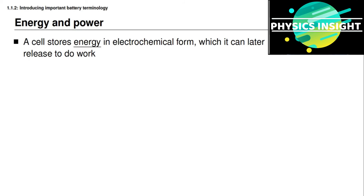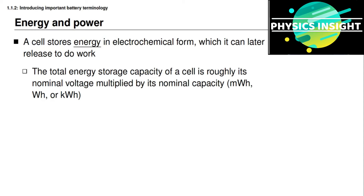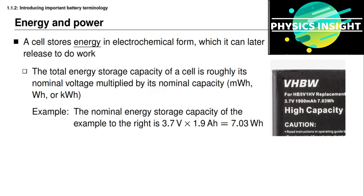We use battery cells because they store energy that we can later release in controlled ways to do work. A battery cell stores this energy in an electrochemical form. The total energy storage capacity of a cell is approximately its nominal voltage multiplied by its nominal capacity. The units for energy are watt-hours, milliwatt-hours for small cells, or kilowatt-hours for large battery packs. For the example cell, multiplying 3.7 volts by 1.9 ampere-hours gives an energy capacity of 7.03 watt-hours.